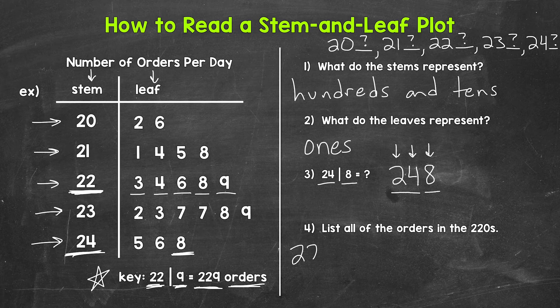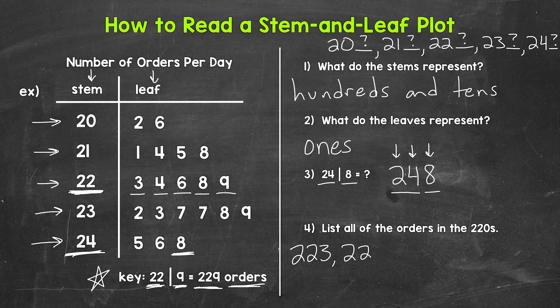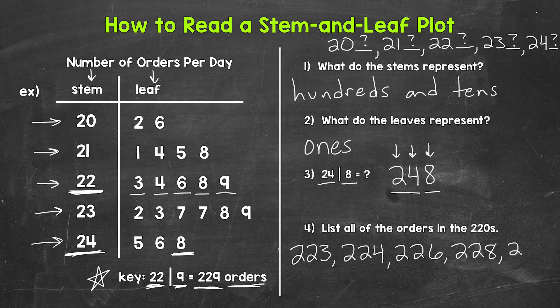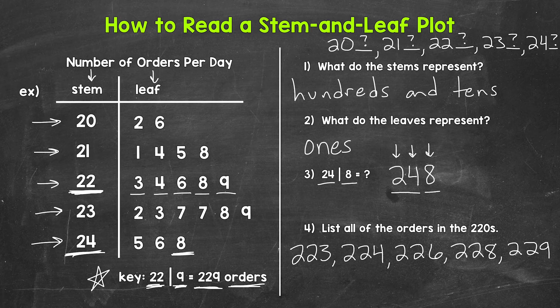So we have 223 orders, 224 orders, 226 orders, 228 orders, and then 229 orders. So those are all of the orders in the 220s.